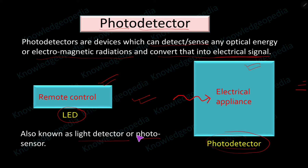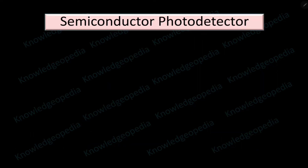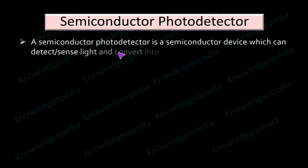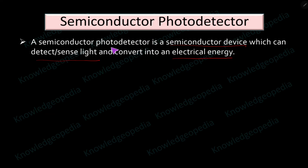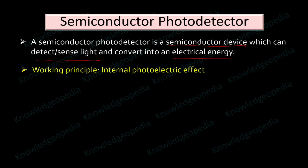Since it is detecting or sensing optical energy, the photo detector is also known as a light detector or photo sensor. In short, any device that detects photons is known as a photo detector. If we use a semiconductor to design that photo detector, then it is known as a semiconductor photo detector. A semiconductor photo detector is a semiconductor device which can detect or sense light and convert that light into electrical energy.